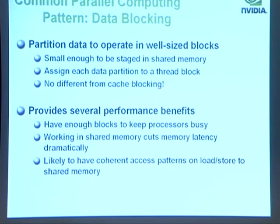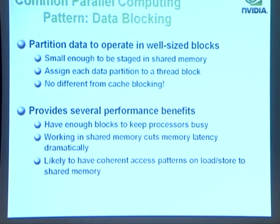A common parallel computing pattern built into the CUDA programming model is data blocking. We partition our data into blocks that are small enough to be staged in shared memory, and we assign each partition to a thread block. That's really not that different from cache blocking on a CPU, where you chunk up your computation to get maximum cache reuse. This provides performance benefits — you have enough blocks to keep all multiprocessors on the chip busy, and it allows you to use shared memory. Without the blocking, the chip couldn't have been designed with shared memory due to latency and physical constraints.